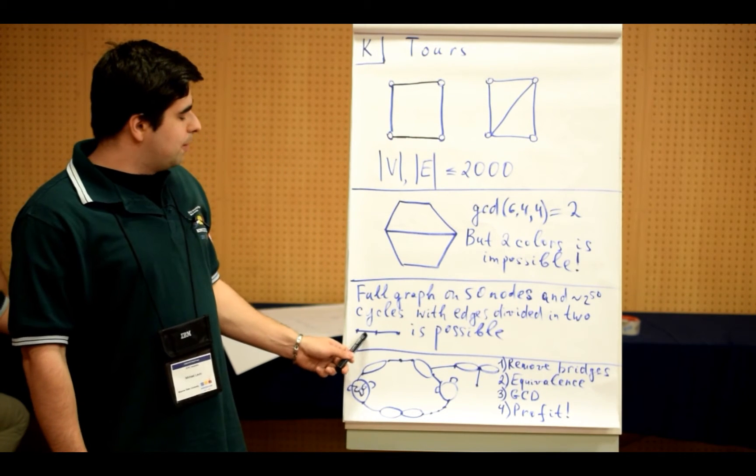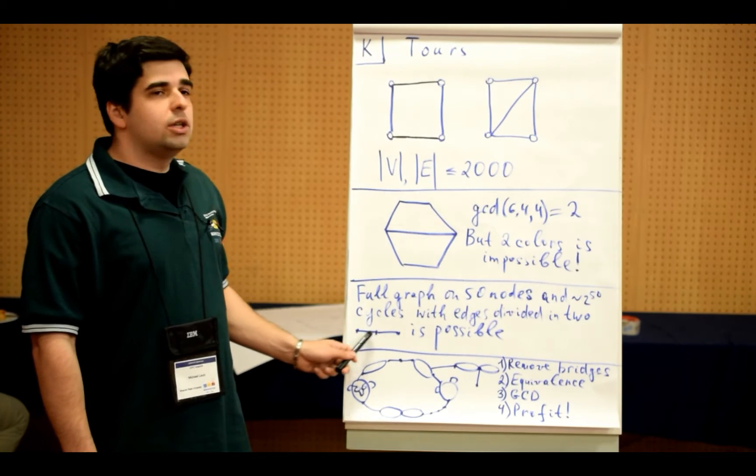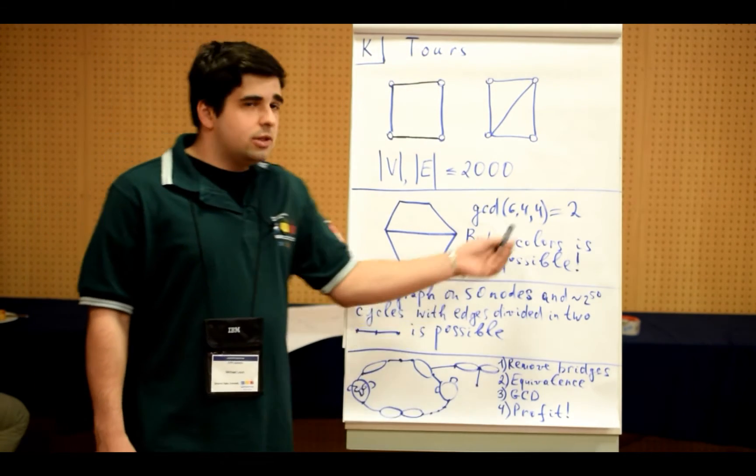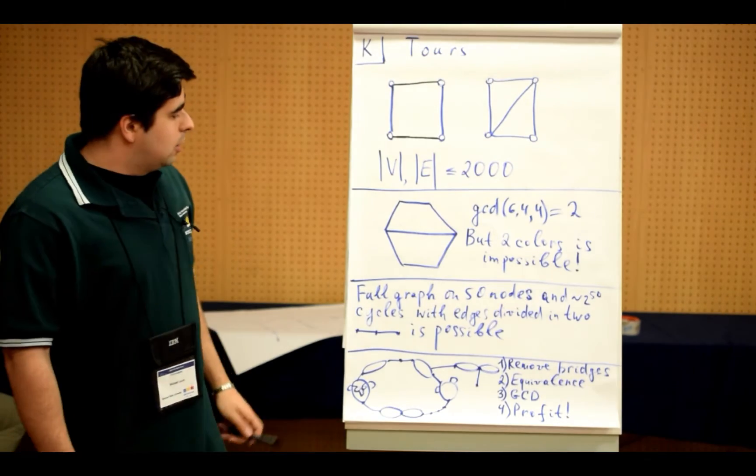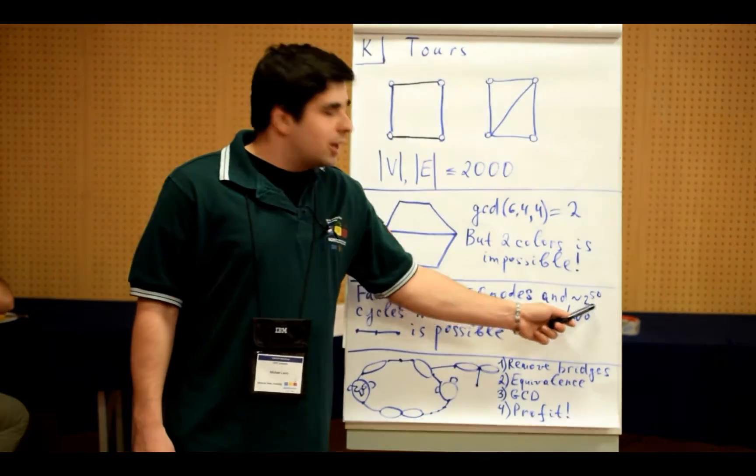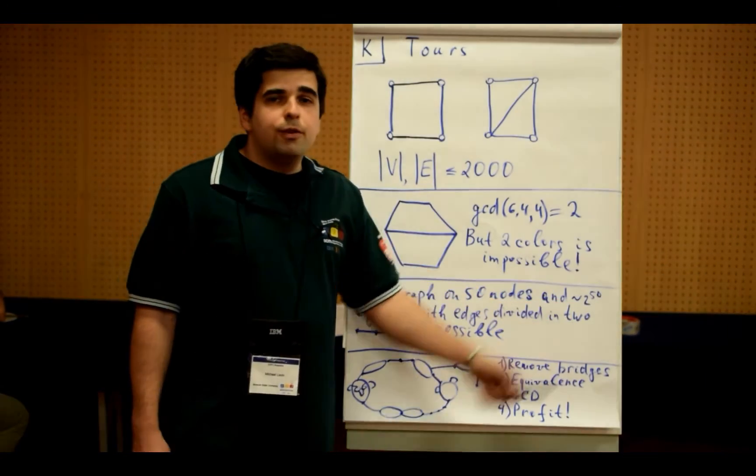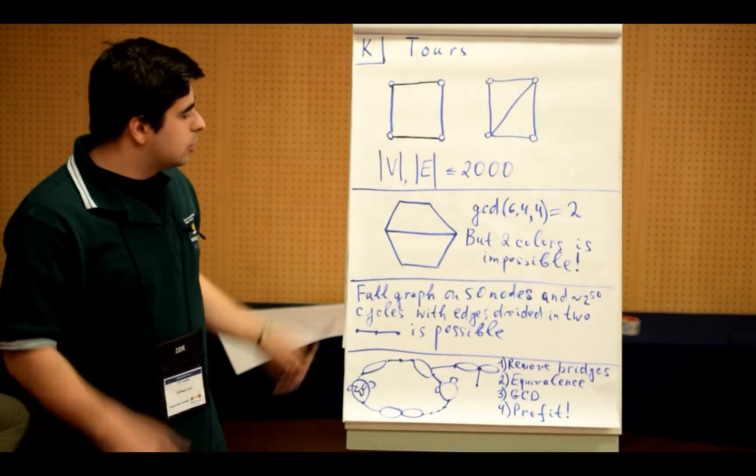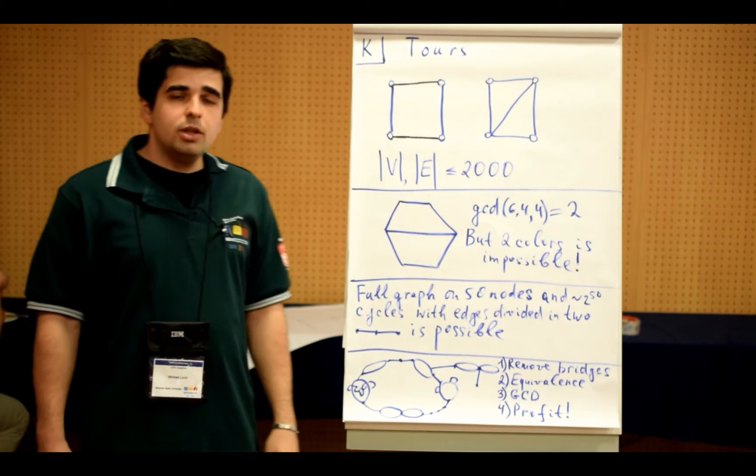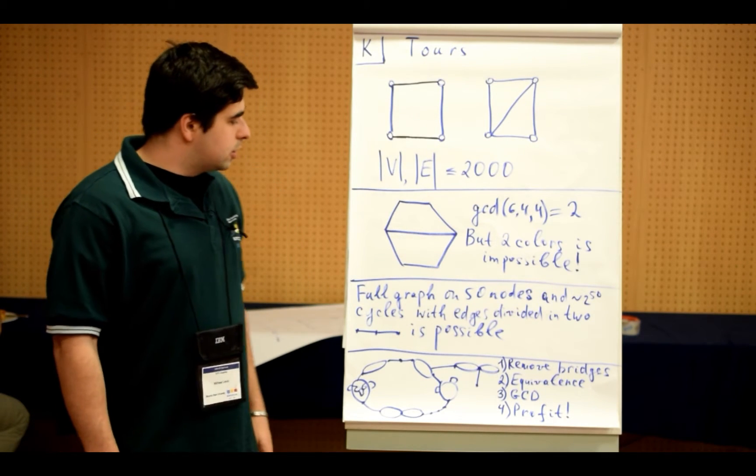But if you, for example, make two edges out of each edge or three or four, then the GCD will be already non-trivial. And the number of cycles in such a graph is around 2 to the power of 50, which is too much to consider in any solution. So what is the intended solution?